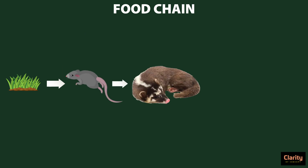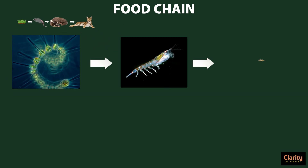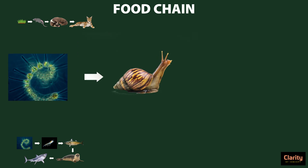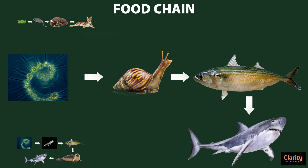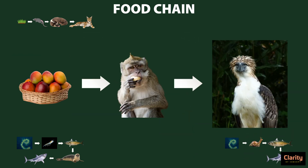Let us see a few more examples. Plants are eaten by mice, mice are eaten by badgers, and badgers are eaten by bobcats. Phytoplanktons are eaten by zooplanktons; zooplanktons are eaten by fish; fish are eaten by seals; and seals are eaten by great white sharks. Planktons are eaten by snails; snails are eaten by mackerel; and mackerel is eaten by sharks. Planktons are microorganisms in a water body that are unable to swim. Fruits are eaten by monkeys, and monkeys are eaten by the monkey-eating eagle, also known as the Philippine eagle. The trophic level one organisms are producers in all of these food chains — plants such as grass, phytoplankton, fruits, etc. This type is called a grazing food chain.